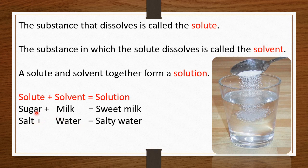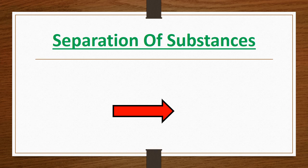Let's take one more example — sugar and milk. Here the solute is sugar and the solvent is milk. When we mix them together, we get sweet milk. That's our solution. Now we are going to understand about the separation of substances.